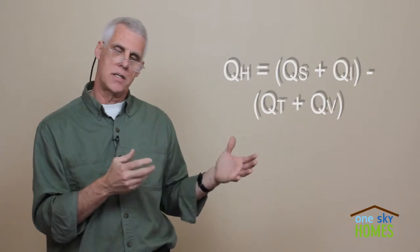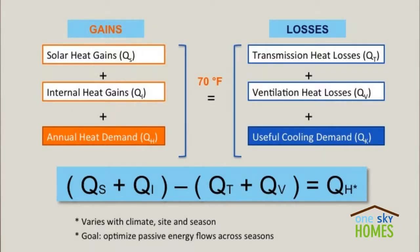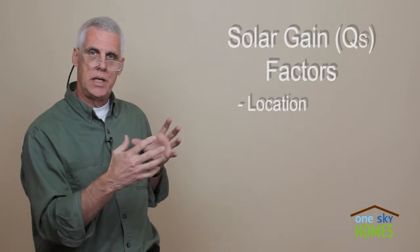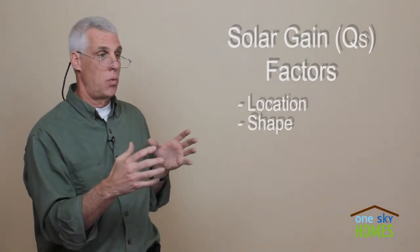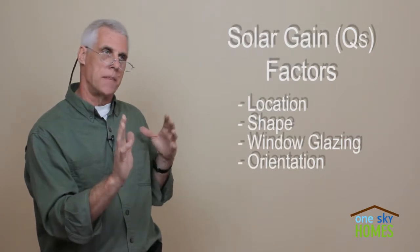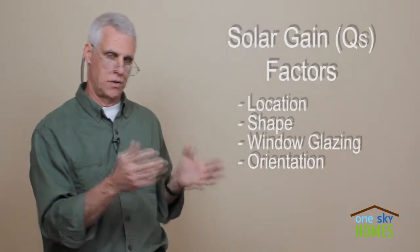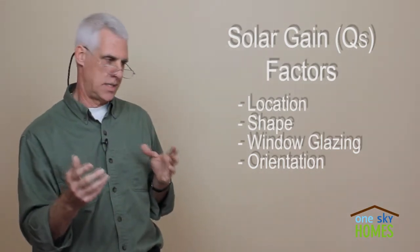As an example: gains minus losses. On the gain side, when we're designing, we're concerned about our variable QS. Our design of the building — location of the building, the shape, what sort of glazing we put in what orientation — these sorts of variables dictate how much solar gain we're going to receive in the building across the seasons: winter, summer, et cetera.